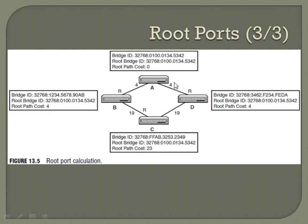Switch A sends that cost via BPDU to both switch B and switch D. When B and D receive it, they take the cost of zero and add on the cost of the path to get there — in this case, each ends up being four. Each of those switches then advertises that BPDU out their ports, so switch C receives a cost of four from each, which it adds to 19, giving a total cost of 23 on switch C for both paths.